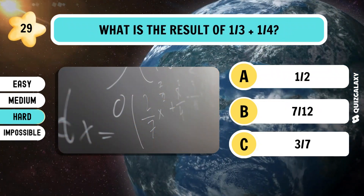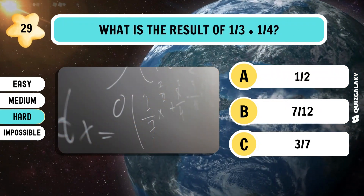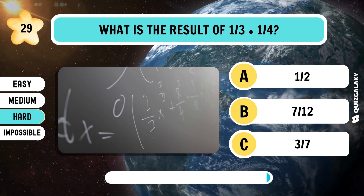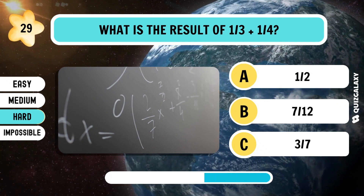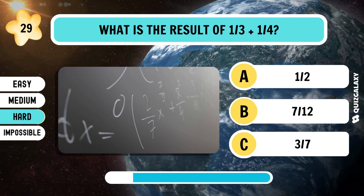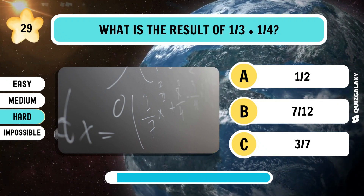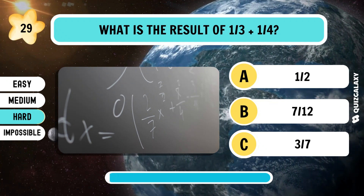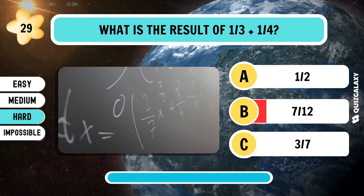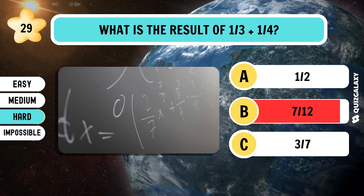What is the result of one third plus one quarter? 7/12.